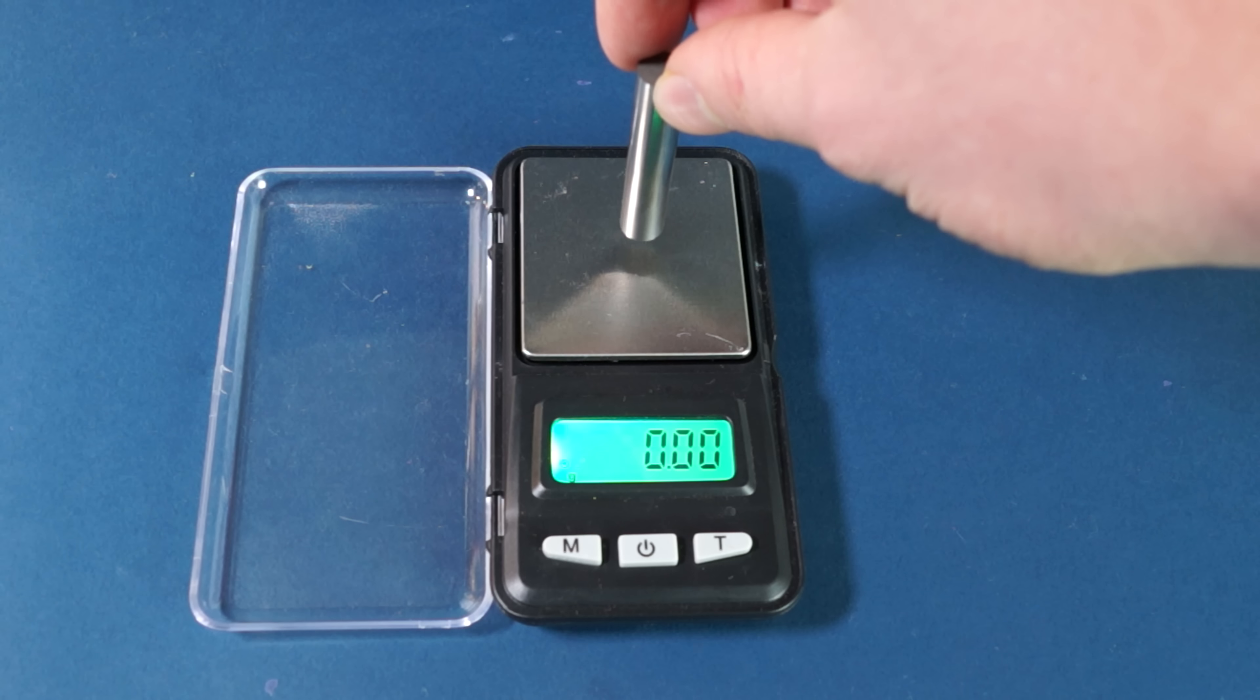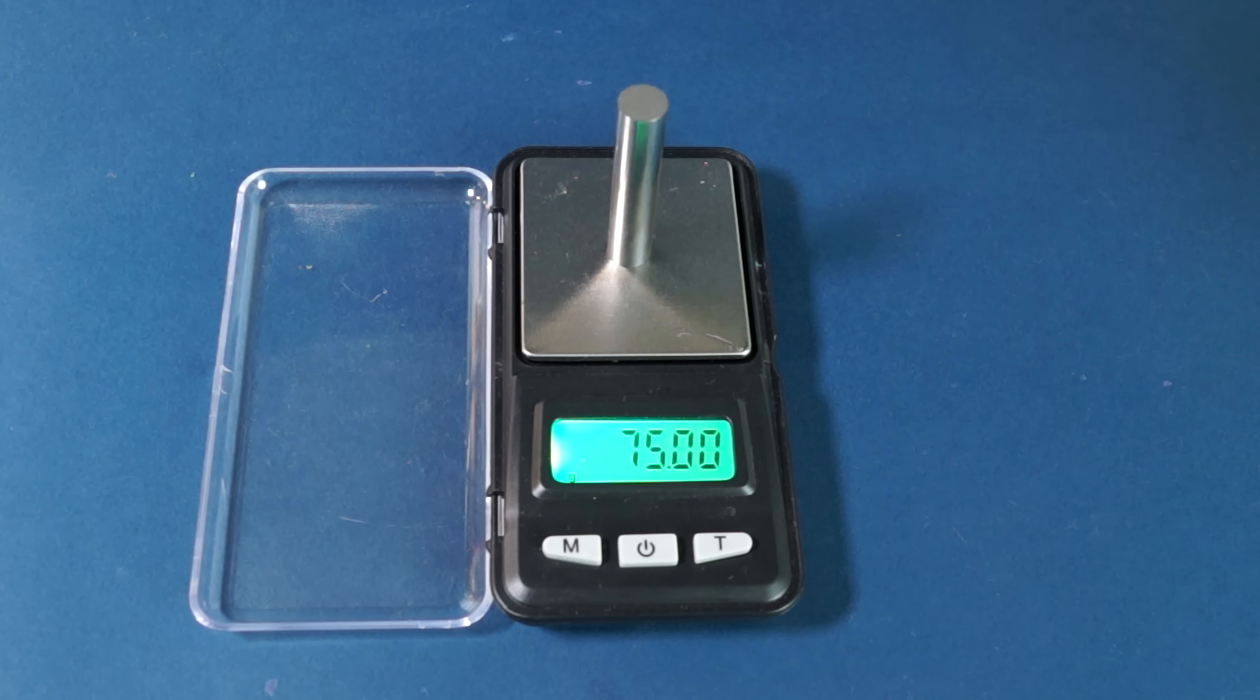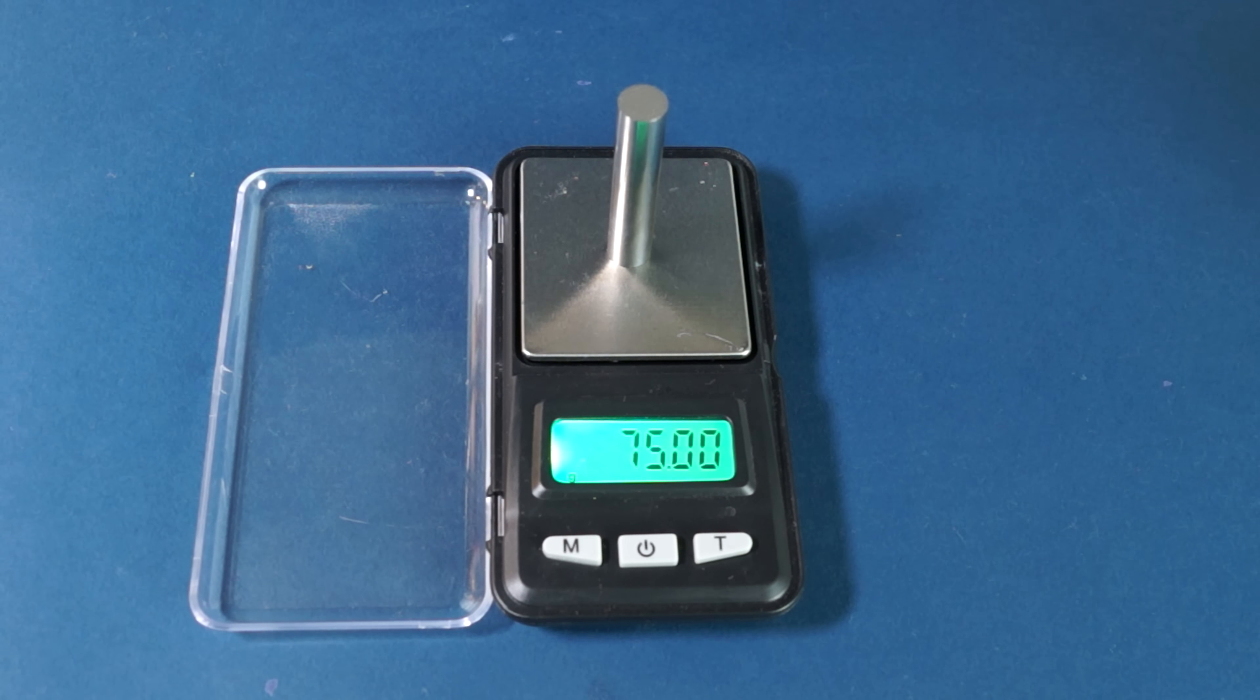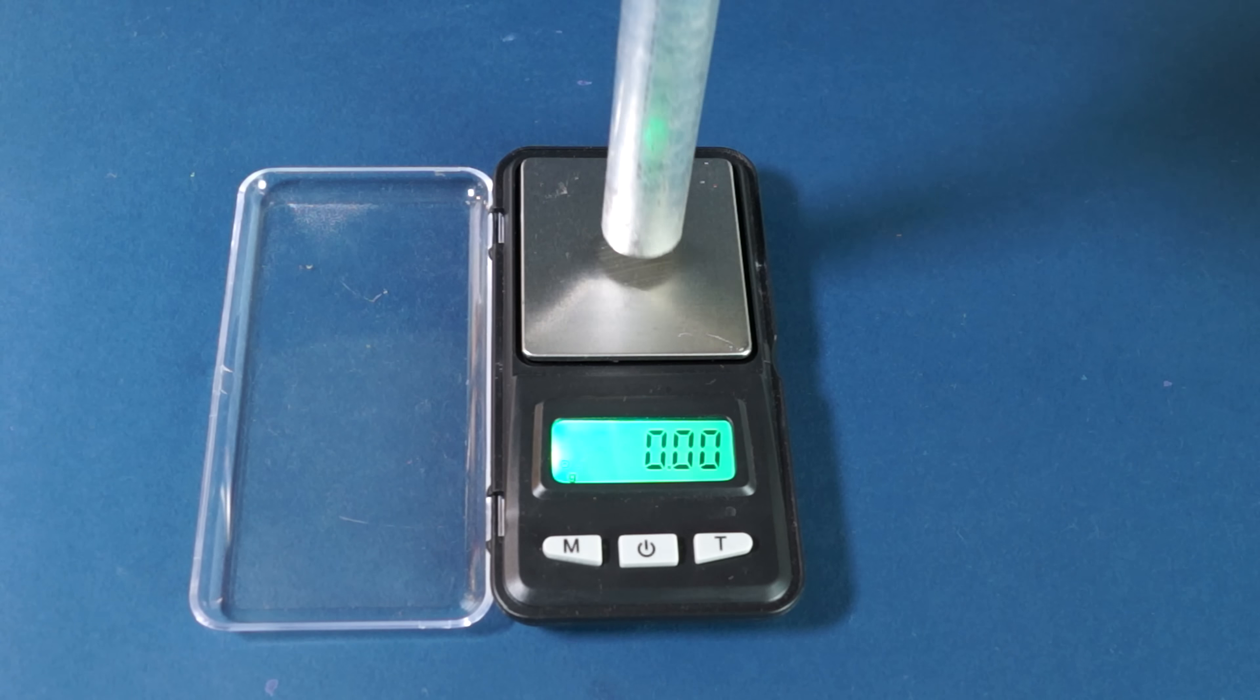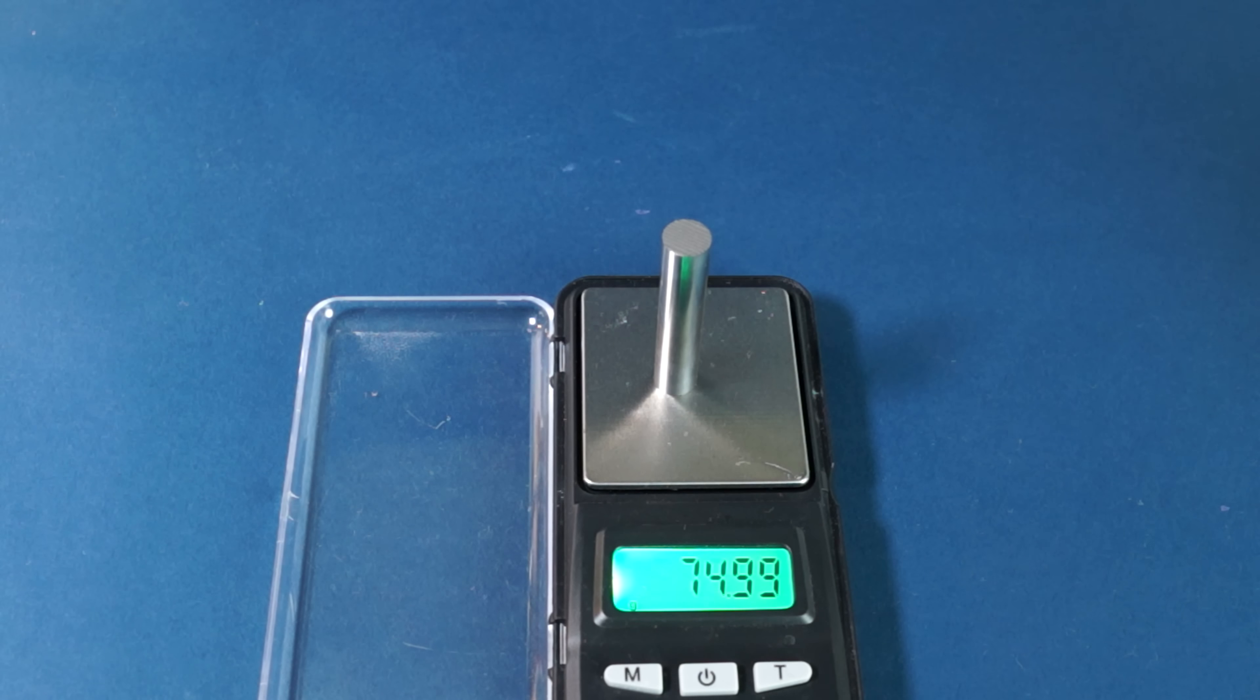To clearly demonstrate how much is 20 grams per cubic centimeter, I'll compare the mass of a rod of tungsten and rod of magnesium. As you can see, the tungsten rod is not only several times smaller than the magnesium one, but is also even heavier than the latter.